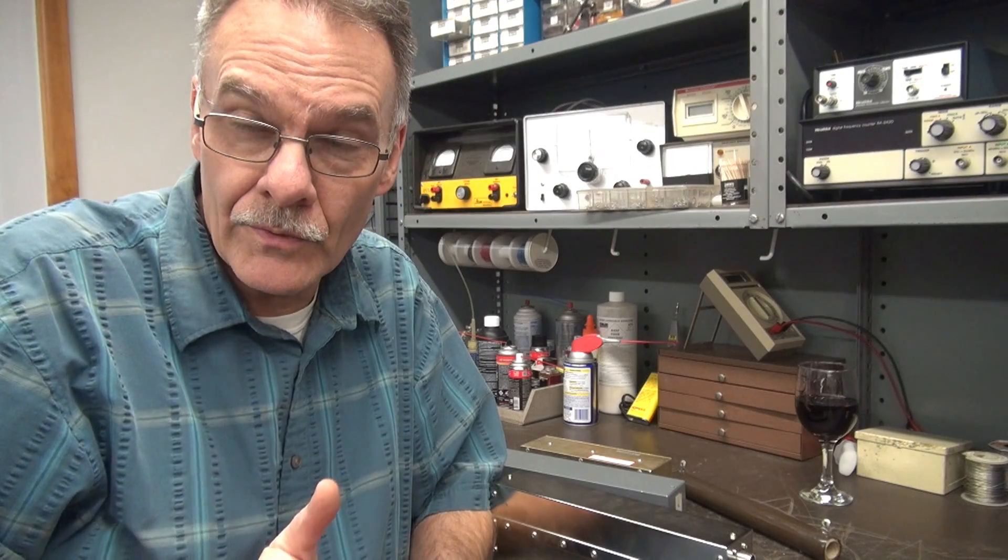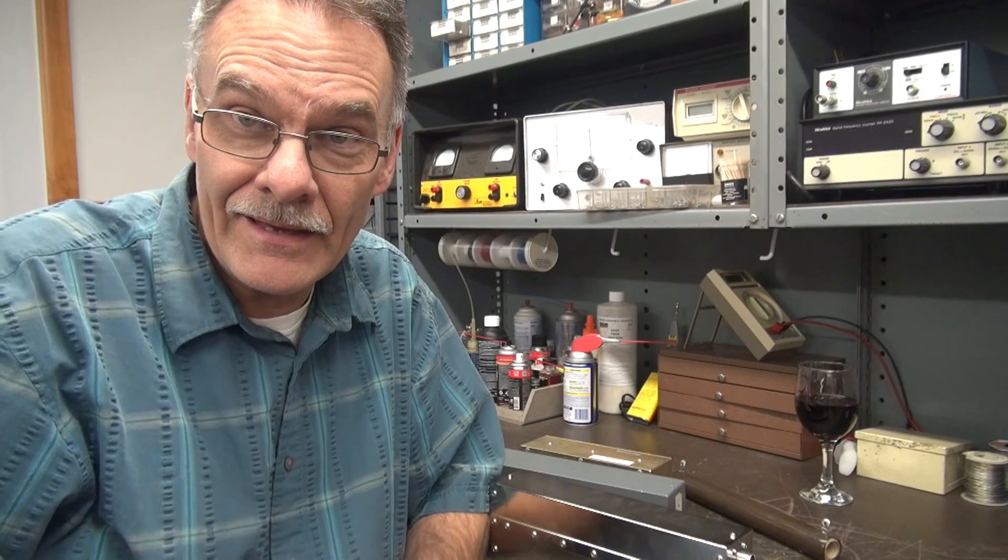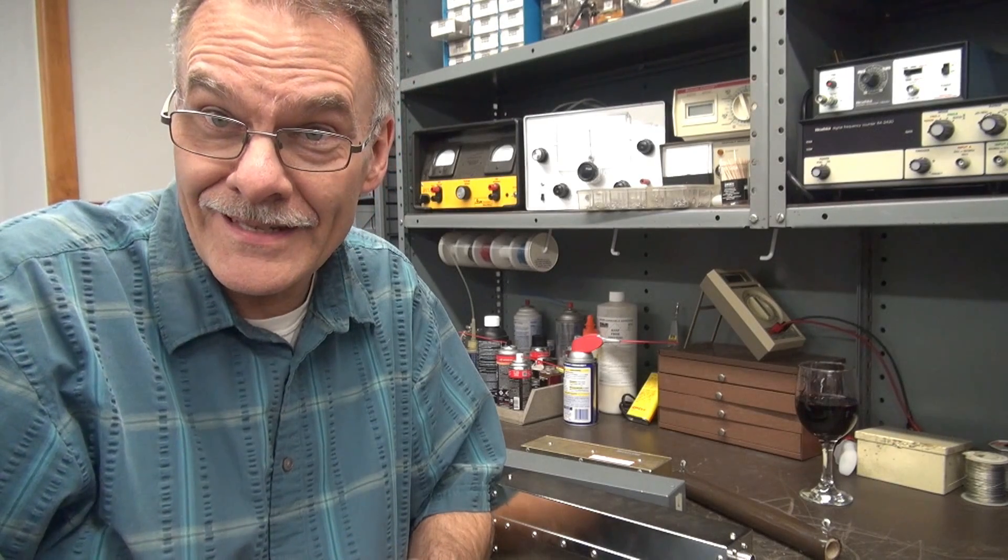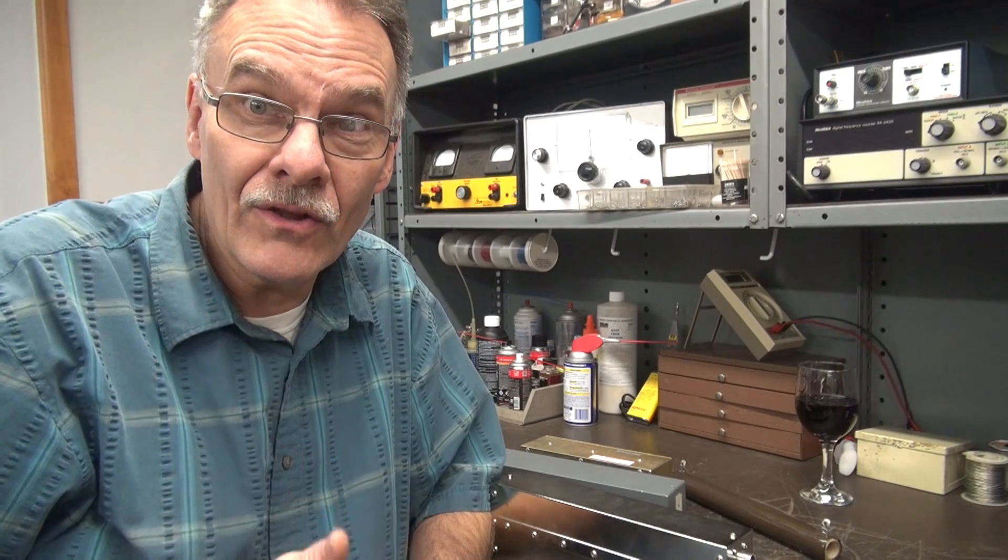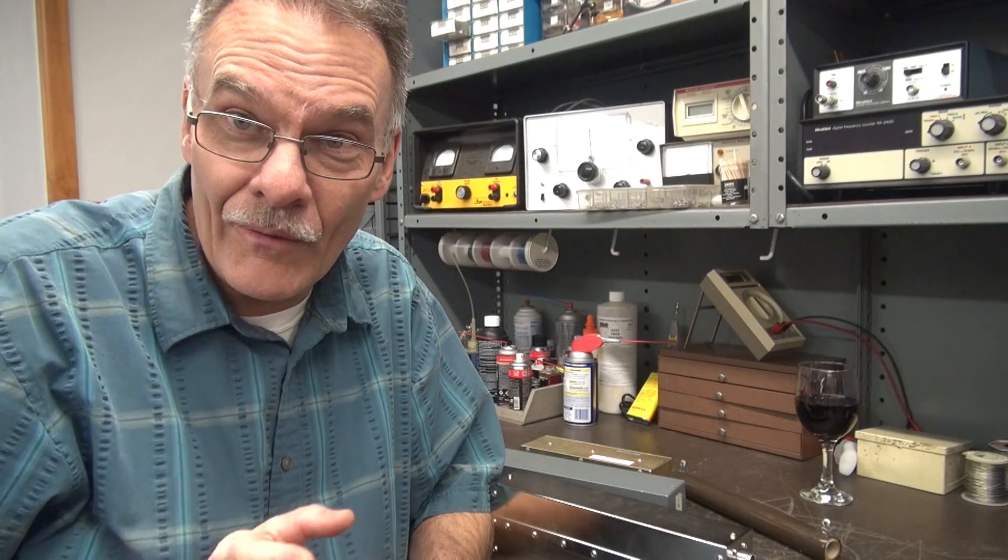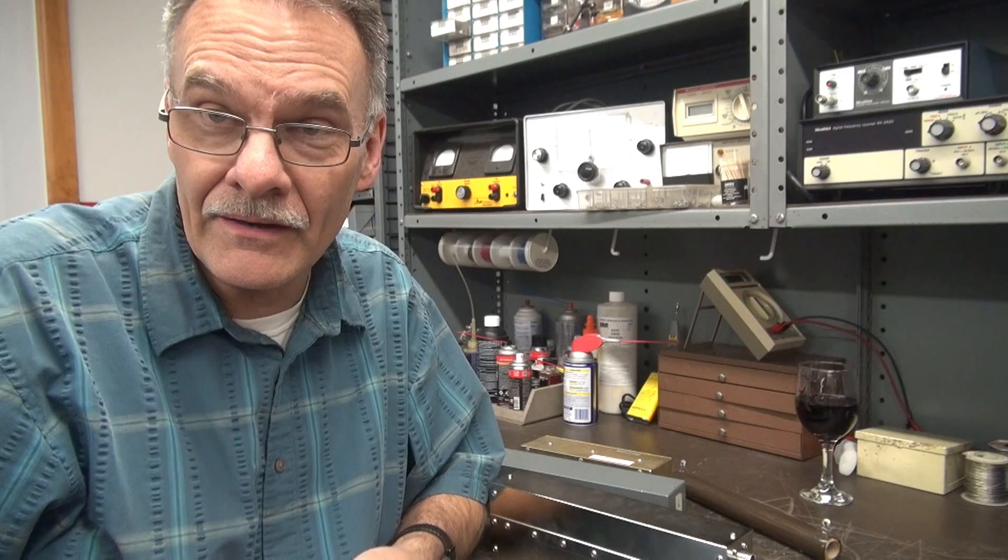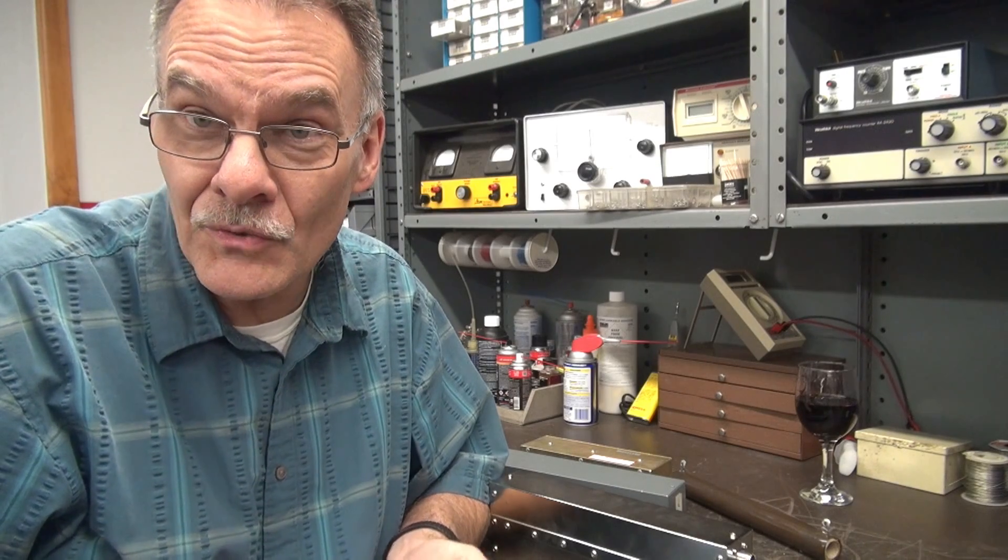So to build your own dummy load resistor, obviously the resistor is fairly easy to get. However, the enclosure is not. You'll find that the enclosure actually costs more than the resistor. However, out on the ham market there is a device that's relatively cheap and can be repurposed into a dummy load.